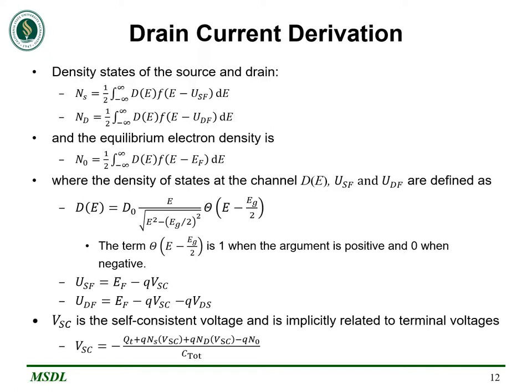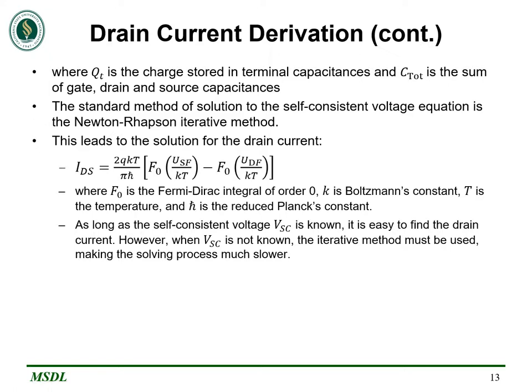Here is an overview of a mathematical derivation to find the drain current. It starts by defining the carrier densities in the source and drain, as well as the equilibrium electron density. It also defines the self-consistent voltage VSC, which implicitly relates terminal voltages and charges. Qt is the charge stored in the terminal capacitances, and Ctot is the sum of the gate, drain, and source capacitances. By using the Newton-Raphson iterative numerical method, we can find the result for the drain current, where we need to evaluate the Fermi-Dirac order-zero integral at two specific energy states. Note that if VSC is not known, the calculation becomes quite dense and lengthy.